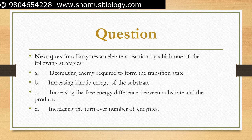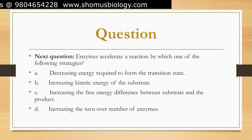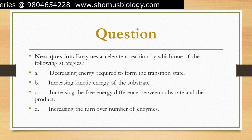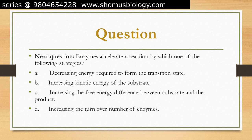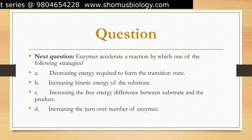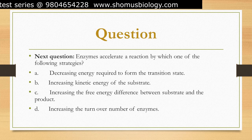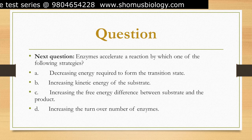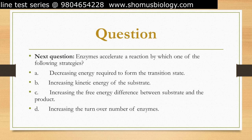Option D is partially incorrect. Enzymes can increase their turnover number, which is the number of substrate molecules converted to product by a single enzyme molecule per unit of time, but this is not the primary strategy by which enzymes accelerate reactions.